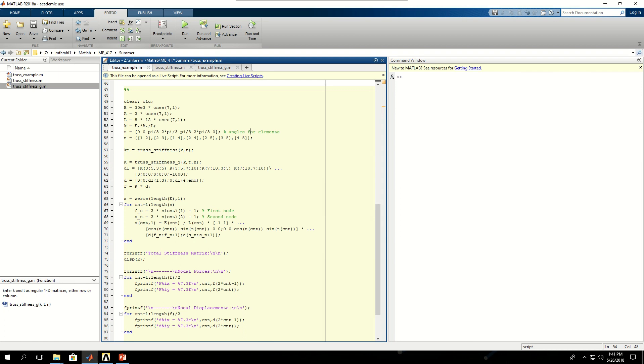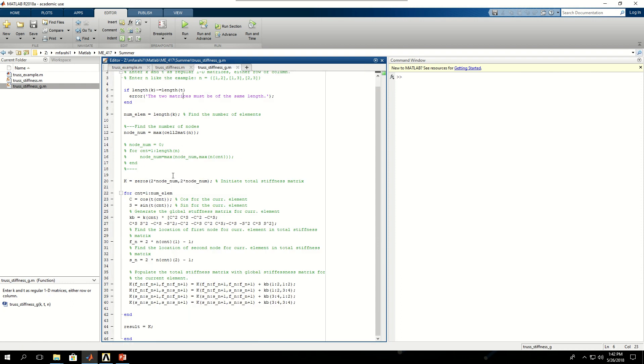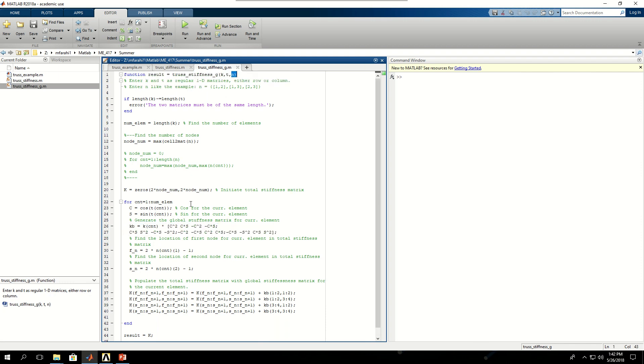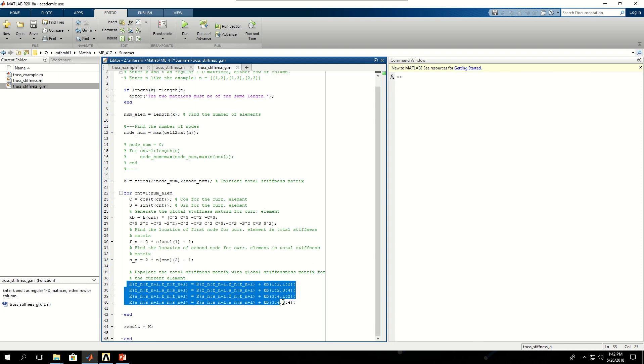Then I've defined another function file, truss_stiffness_g, which gives me the total stiffness matrix for the truss system. So this is that. It makes the global stiffness matrix per element. And then using the n that I sent to the function file as an input, it finds the two endpoints, or the end nodes of the element, and then uses these values to populate the total stiffness matrix, which is there. And then it returns the total stiffness matrix to my code, k there.